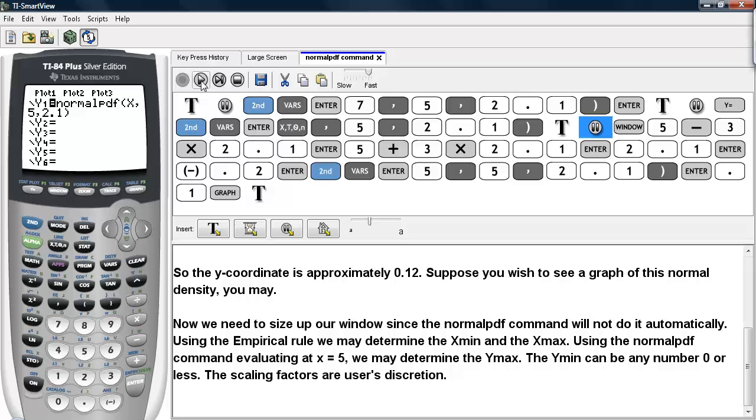Now we need to size up our window since the normalpdf command will not do it automatically. Using the empirical rule, we may determine the x-min and x-max values.